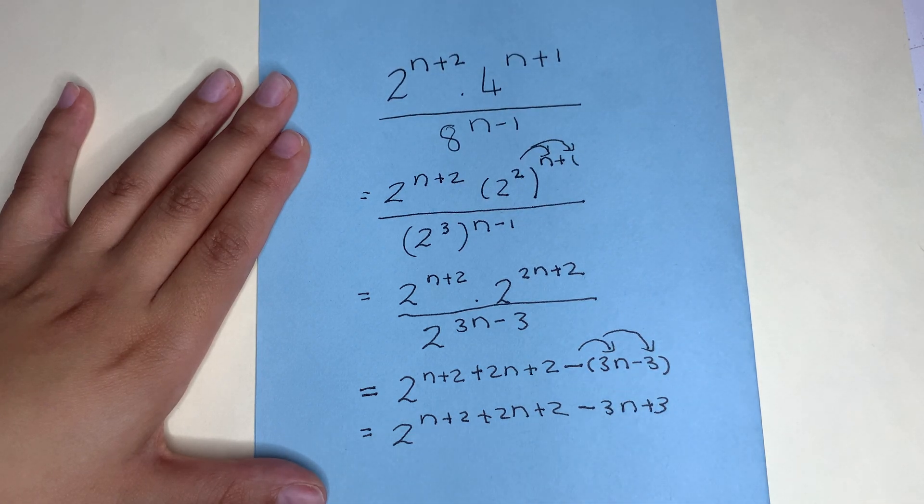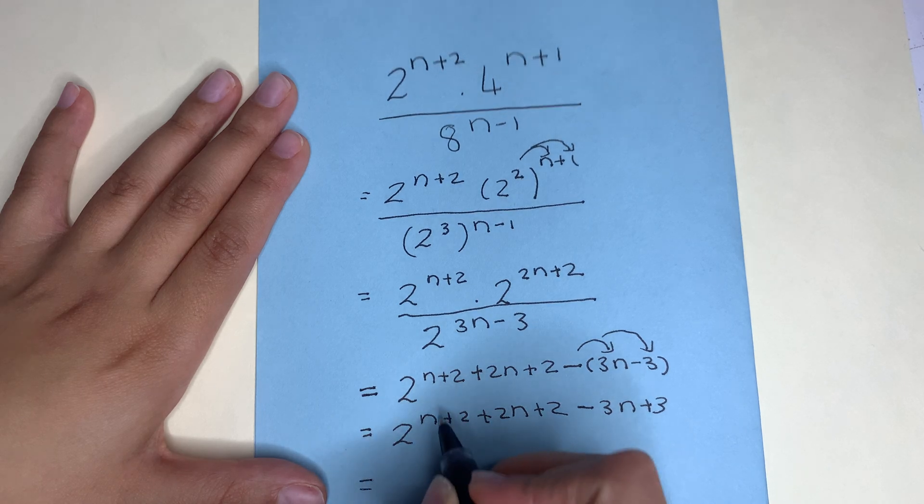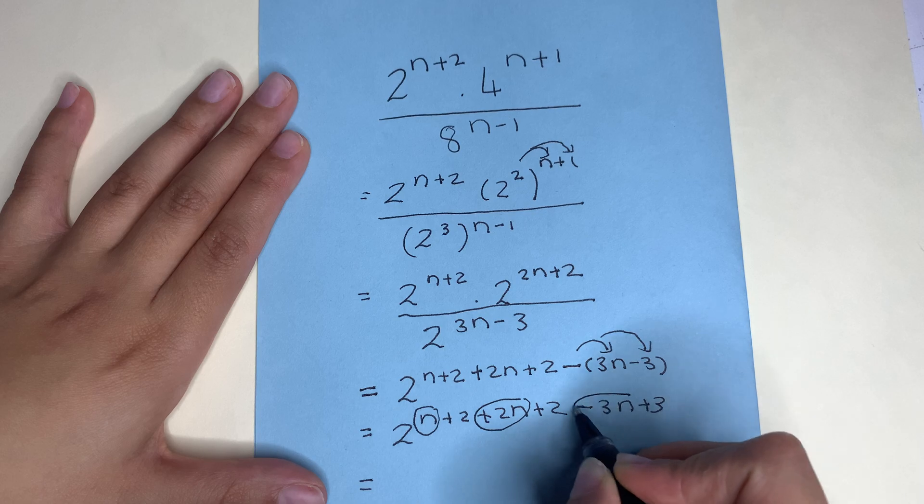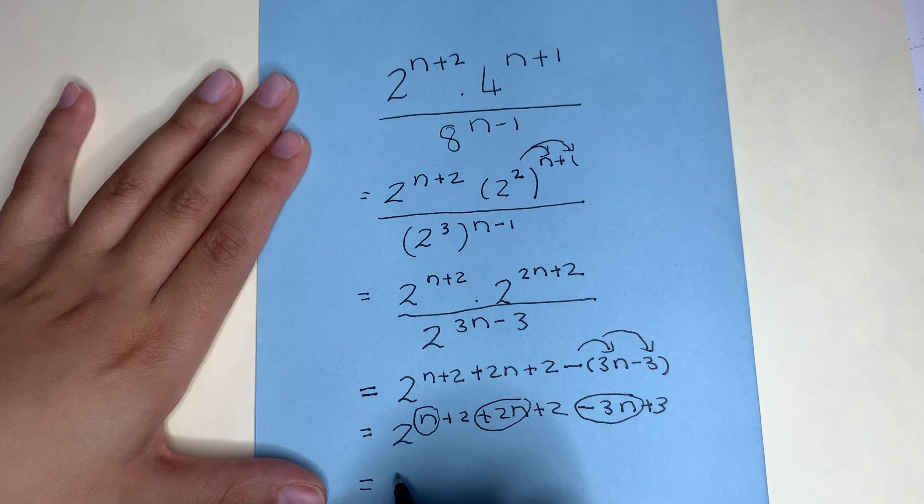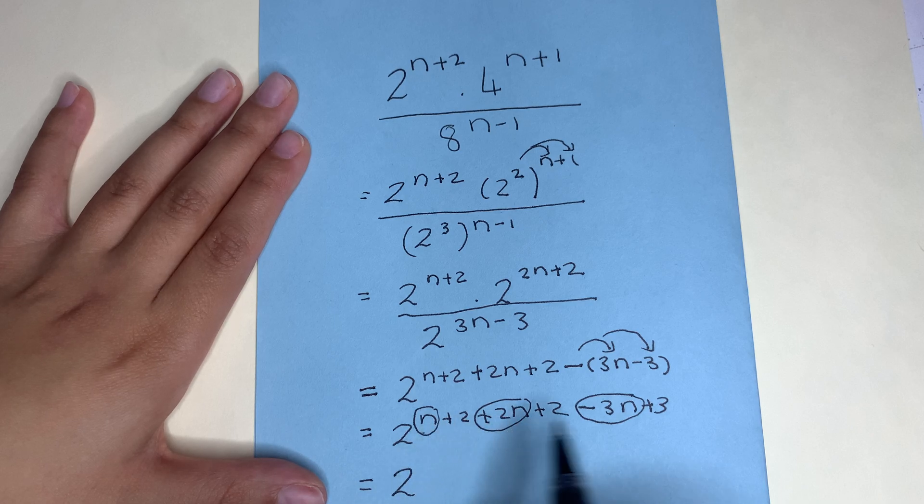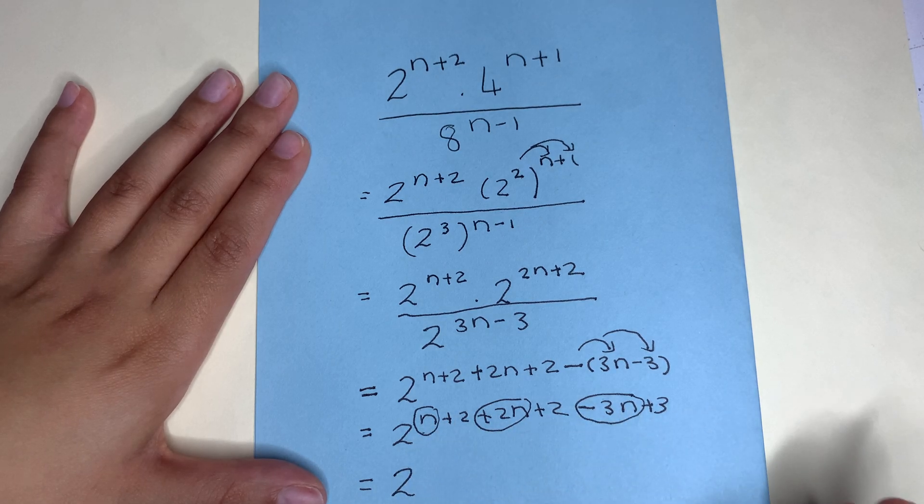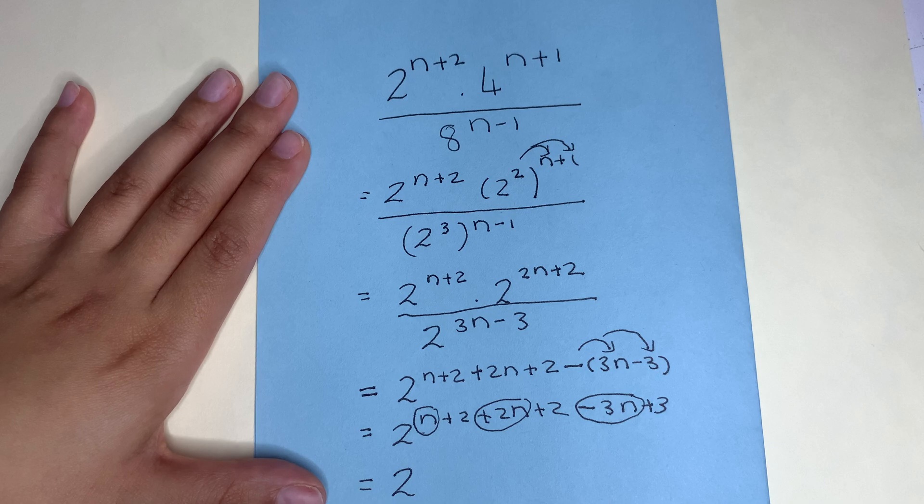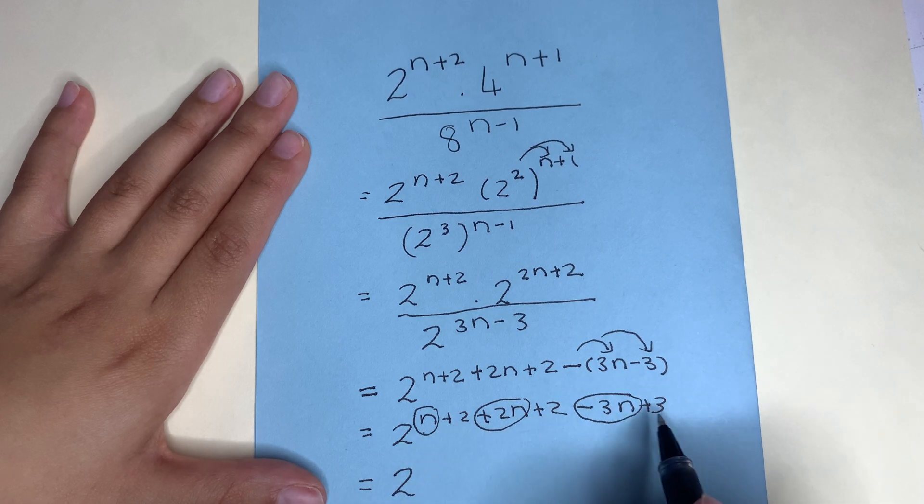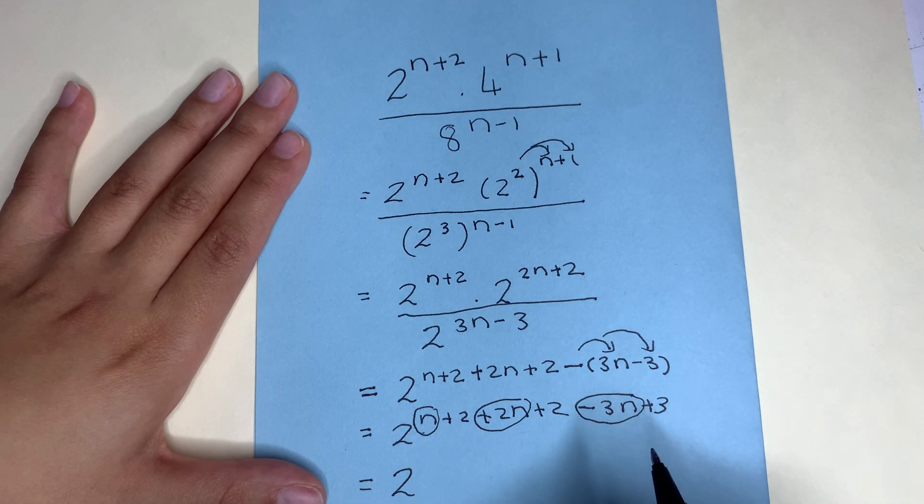Now simplifying like terms, we've got an n term, a 2n term, a minus 3n term and the rest of them are numbers. n plus 2n is 3n but if we take 3n away from that it cancels out. So we don't have any n's in our exponent. 2 plus 2 is 4 and 4 plus 3 is 7.